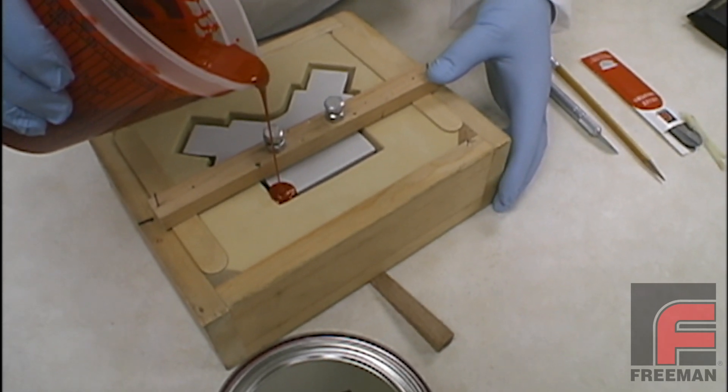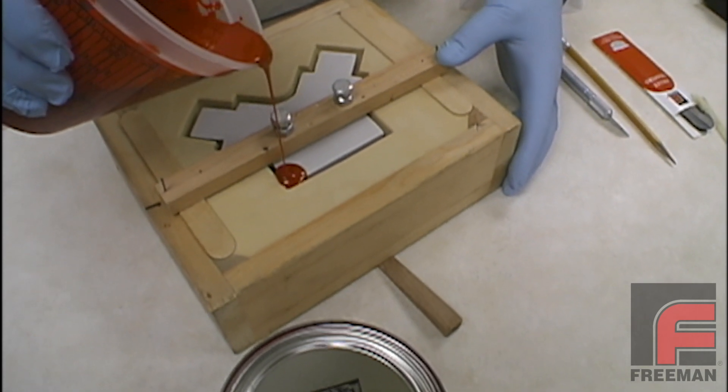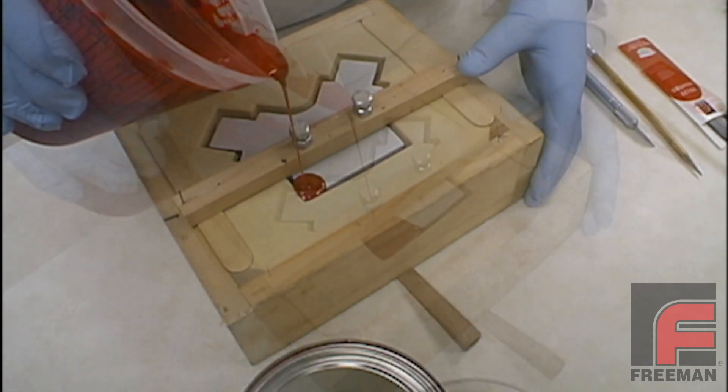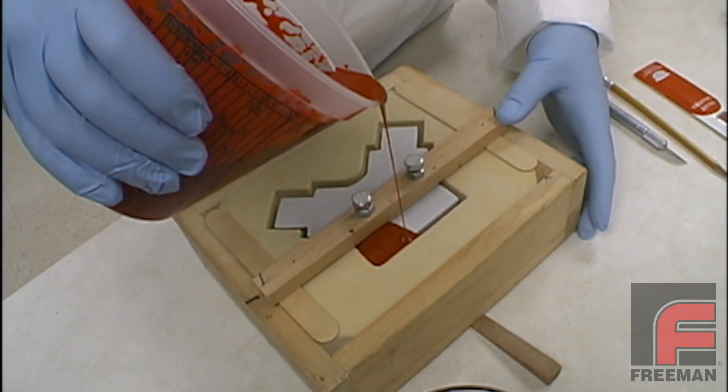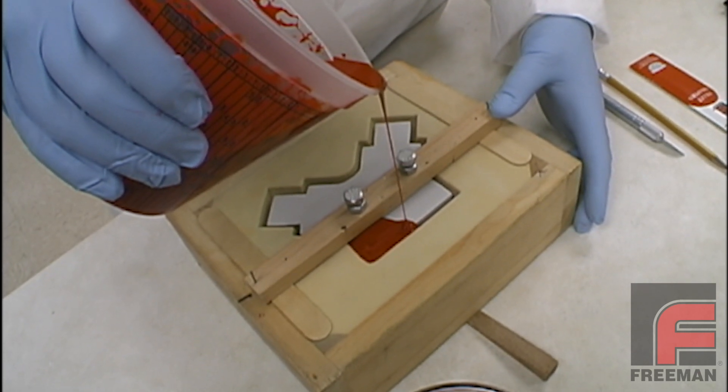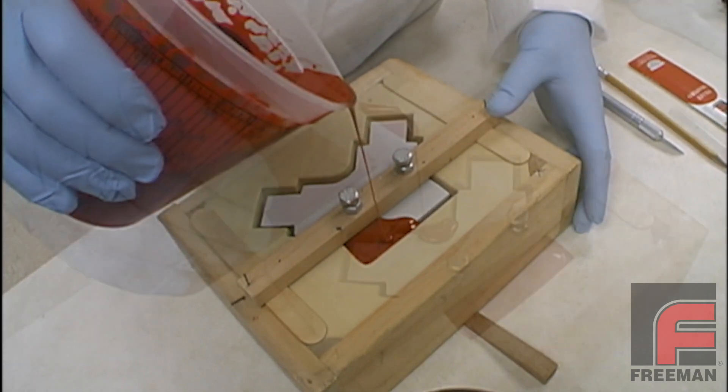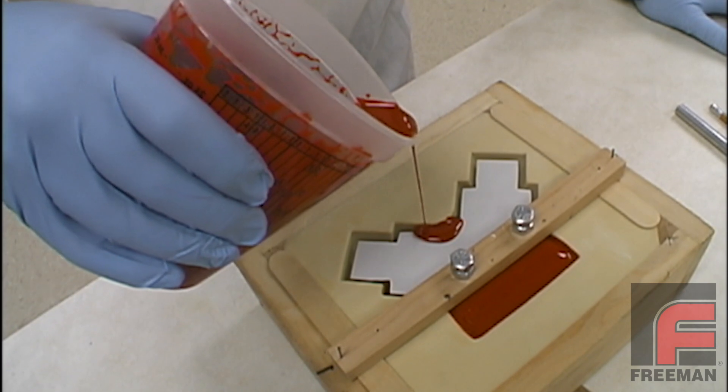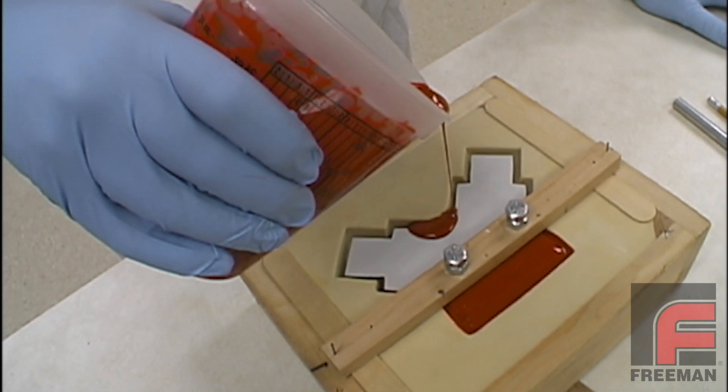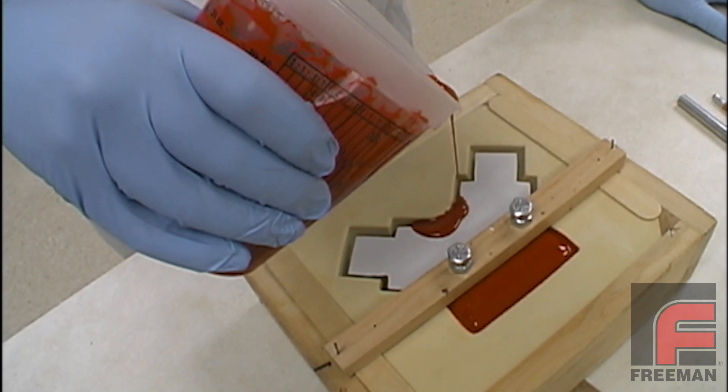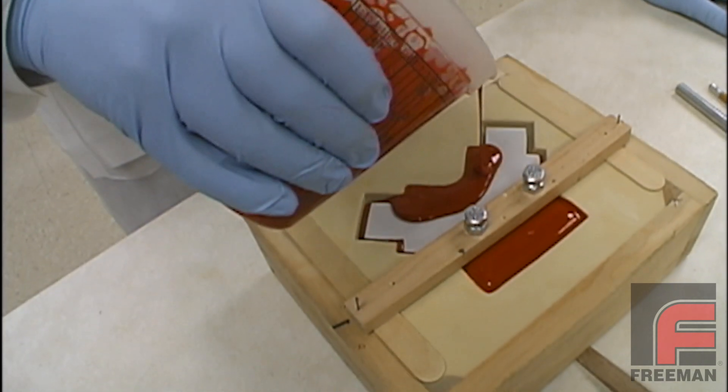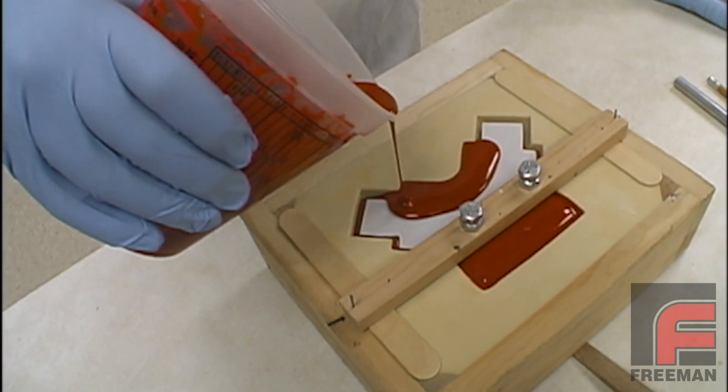We start pouring in a corner and allow the material to flow between the core and the mold surface. We have started pouring at the deepest part of the mold to minimize air entrapment. As the mold fills, it may be necessary to pour along the length of the one-eighth gap to totally complete the pour. The pour is finished when the top of the core is entirely covered with resin.